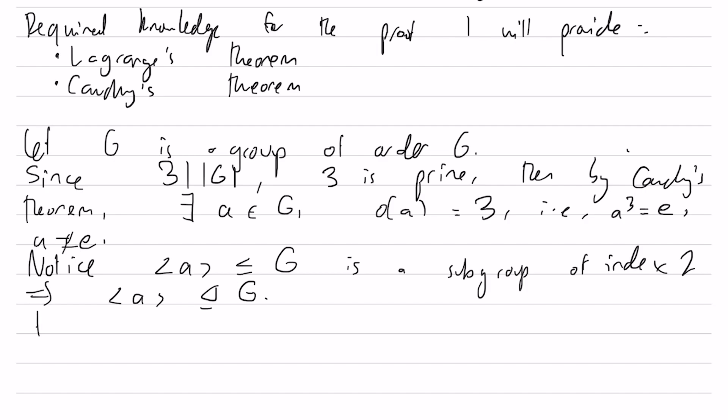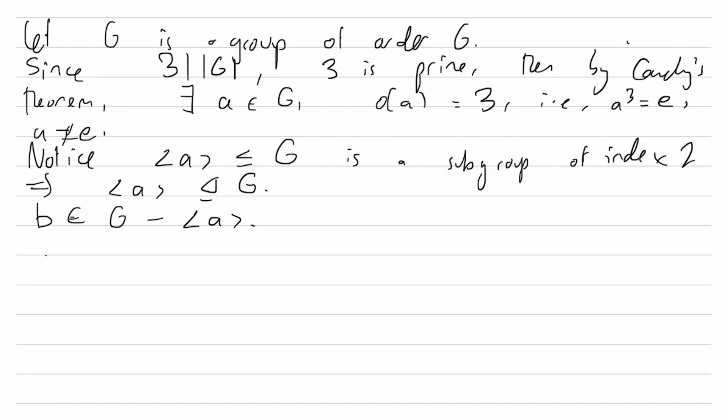Now let's take some B in G but not in that cyclic subgroup. I claim that we must have B squared in the cyclic subgroup. Why is that? Well, because the quotient group G/⟨A⟩ has order 2. So any element of the quotient group must have order 2.